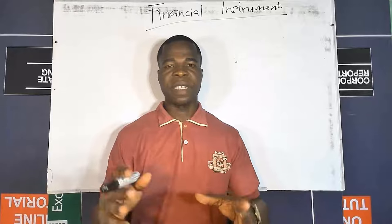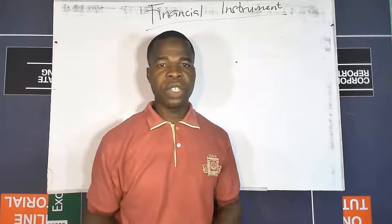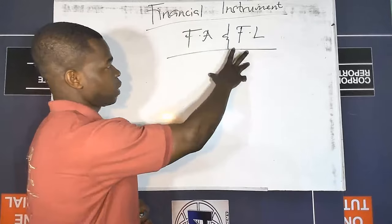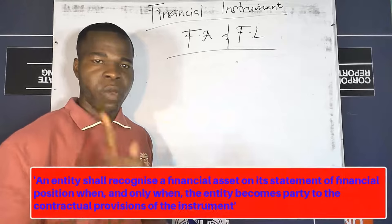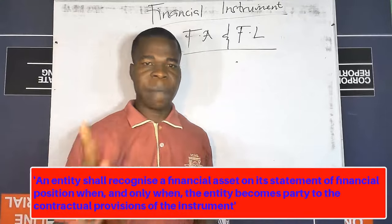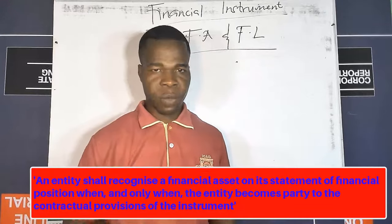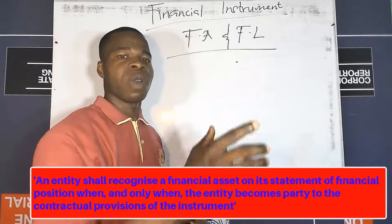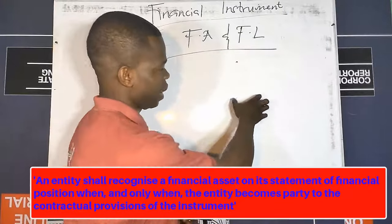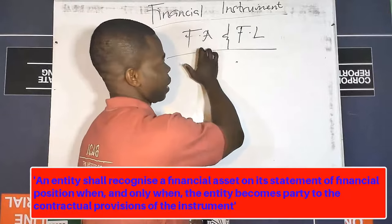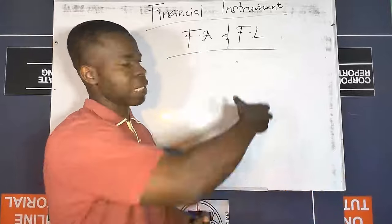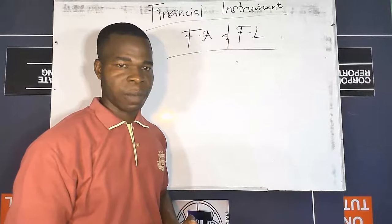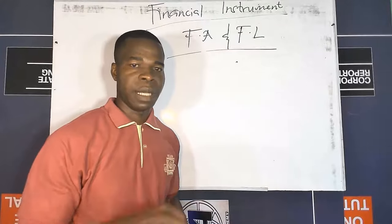Having understood the definitions, let's turn our attention to recognition. When should a financial liability or financial asset be recognized in the books of the entity? A financial asset or financial liability can only be recognized when and only when the entity becomes a party to the contractual provisions of the instrument. If two parties have a statutory or non-contractual arrangement, the items being traded should not be classified as financial assets or financial liabilities.